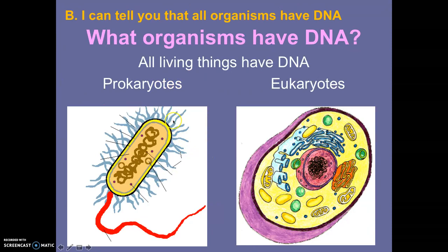What organisms have DNA? All living things are going to have DNA. Eukaryotes that have a nucleus — the DNA is going to be found there. Prokaryotes, on the other hand, do not have a nucleus, but they do have DNA. All living things — bacteria, fungi, protista, animals, plants — you name it, it has DNA inside of it. So all living things have DNA.